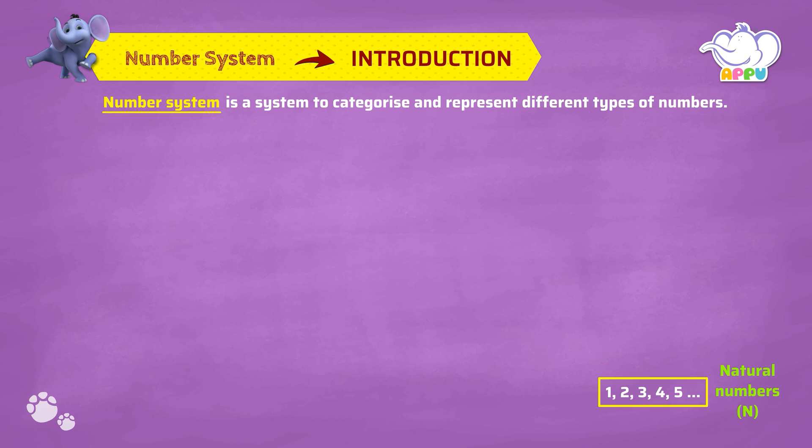These natural numbers along with zero are whole numbers denoted by capital W. 0, 1, 2, 3, 4, 5, etc.